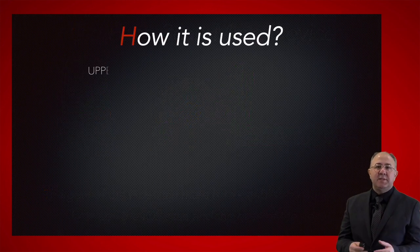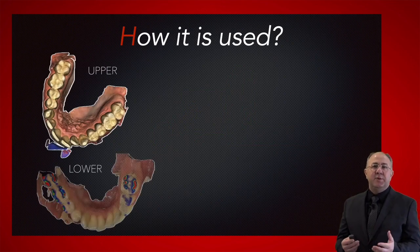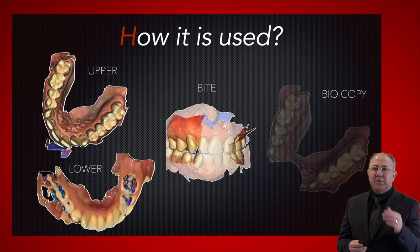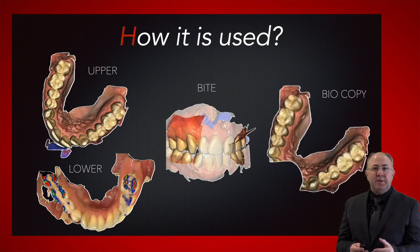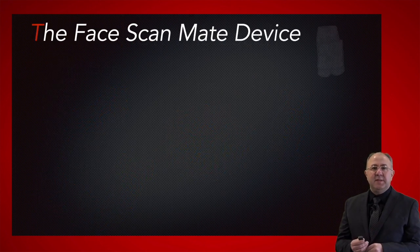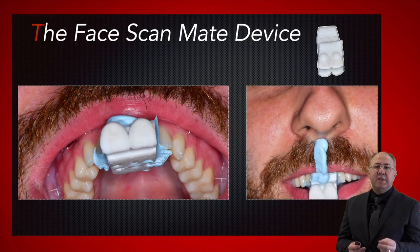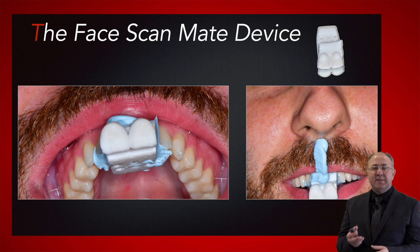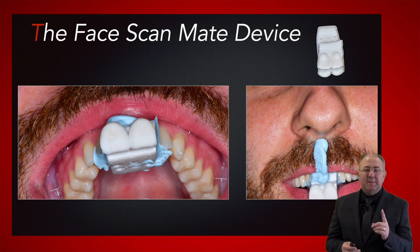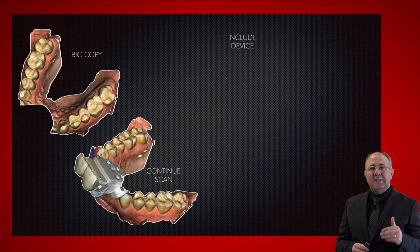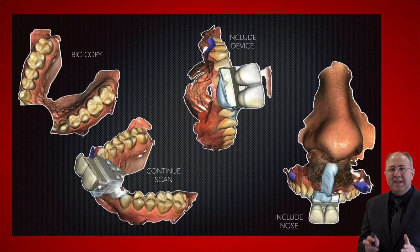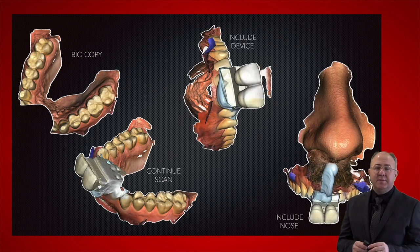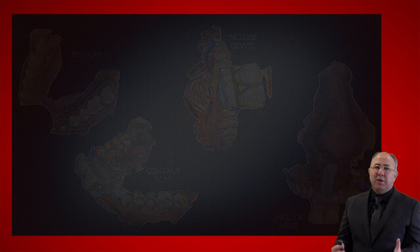The way it works: we start by taking an upper scan, lower scan, and a bite scan as normal. Then we create a biocopy or pre-op scan for the upper and trim the anterior portion from that scan. Next, we use bite registration material to fill the tray section of the device and seat it into the anterior segment of the patient's mouth. We then add more bite registration material between the device and the base of the nose — a very critical step. We go back to the intraoral scanner and ask it to continue scanning to include the device and the nose.